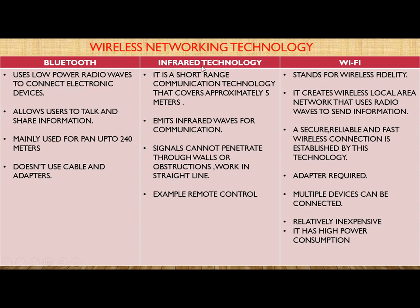The next wireless technology is Infrared, which you must have seen in remote controls. When you press a button on a remote control to operate your television, it uses infrared signals to communicate. Infrared is a short-range communication technology that covers approximately 5 meters. It emits infrared waves for communication, but signals cannot penetrate through walls or obstructions — they work in a straight line. A common example is the remote control.